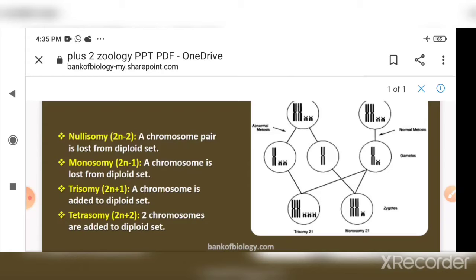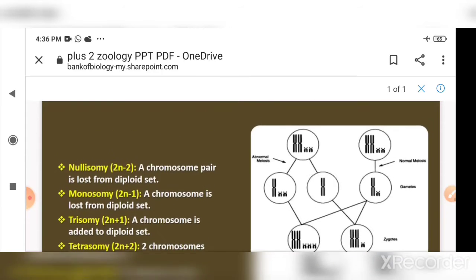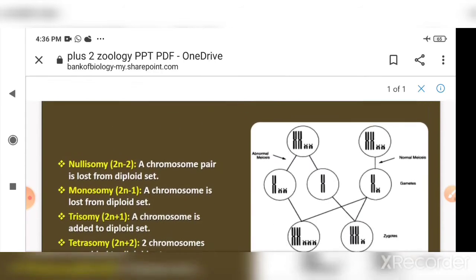In tetrasomy, two chromosomes are added to the diploid set, making four chromosomes at that position instead of two. So there are four conditions in aneuploidy: nullsomy, monosomy, trisomy, and tetrasomy.